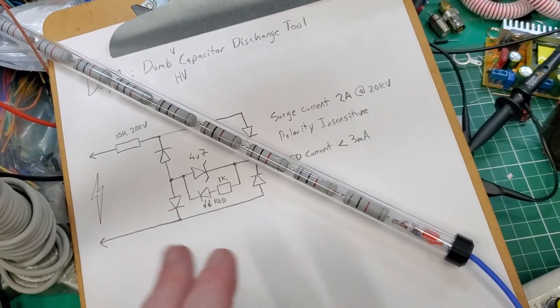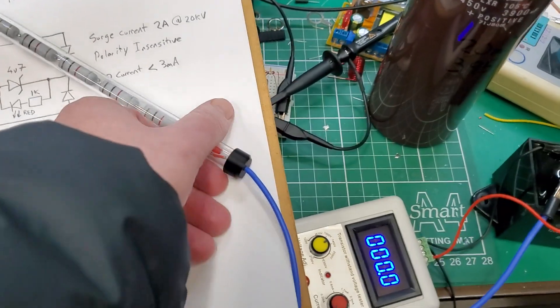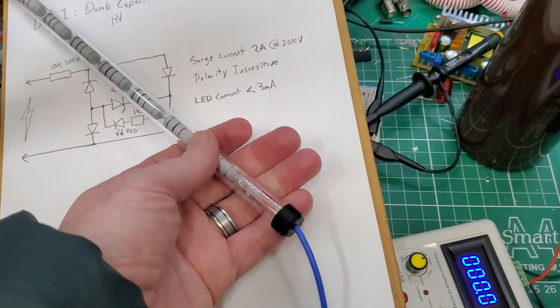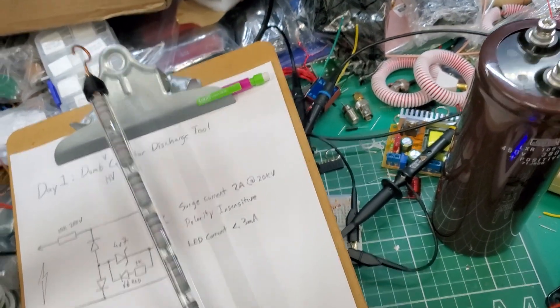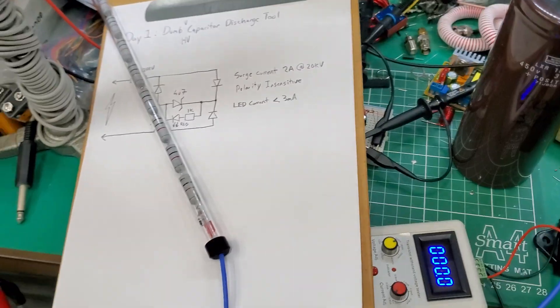I didn't build it that way, but in hindsight I probably should have built it that way, because when you're holding the low-potential end here, you're kind of covering it up. Whereas having it at the tip would actually make a lot more sense. But, next version perhaps.